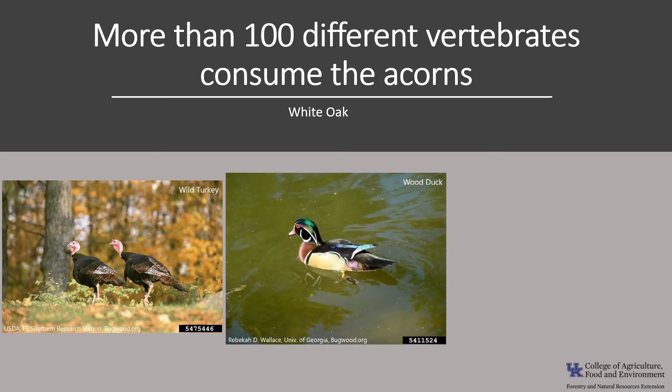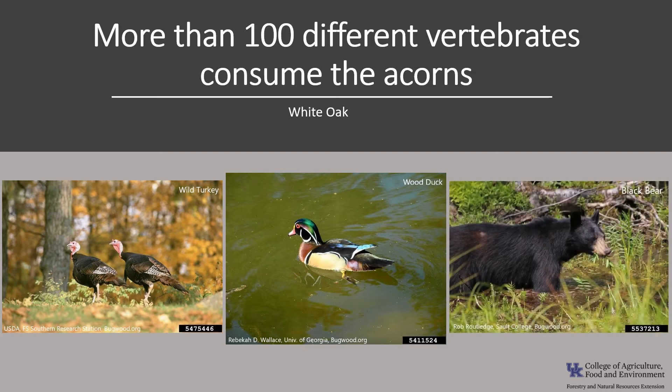Mammals that eat the acorns include red squirrel, rabbits, and black bear. In some areas, black bear reproductive success is affected by the success or failure of the acorn crop.